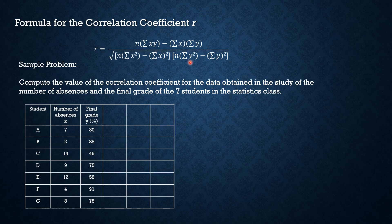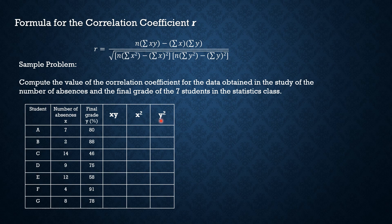In the formula, we need to get the summation of xy, the summation of x squared, and the summation of y squared, so that we can compute fully for the correlation coefficient r. So we have here the xy column, the x squared column, and the y squared column.